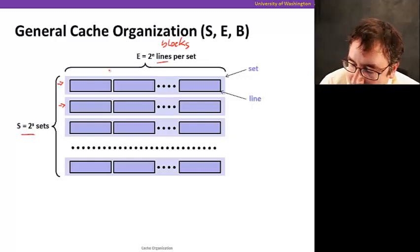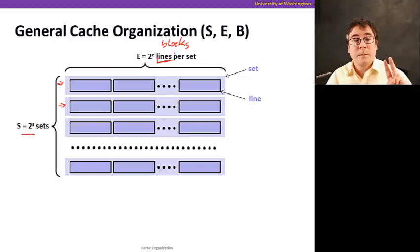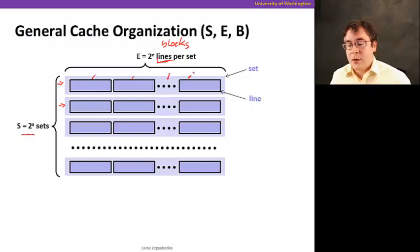A set has a number of lines, which is the same thing as the way. If I say a cache is a four-way associative, it means that we're going to have one, two, three, four lines in a set.